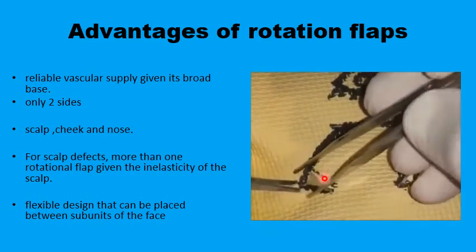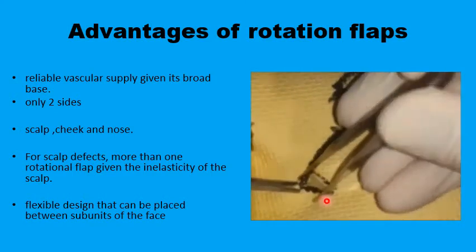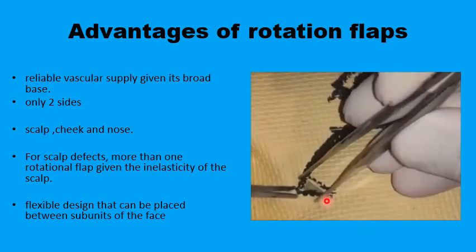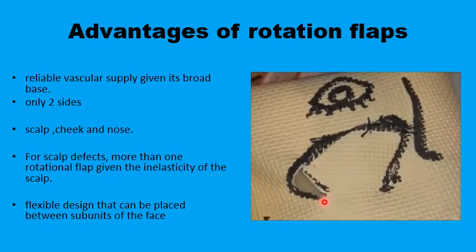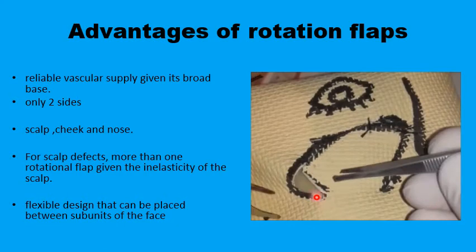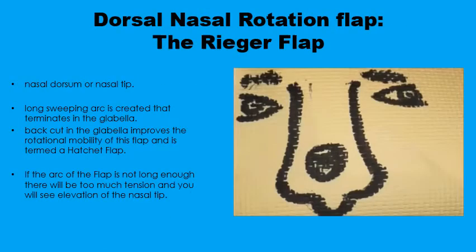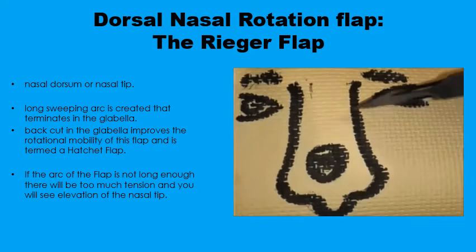As shown here, you can use either a Burrows triangle or a V-to-Y closure to the back cut of the flap. Rotation flaps can be used in several areas of the head and neck, including the tip of the nose and the nasal dorsum.